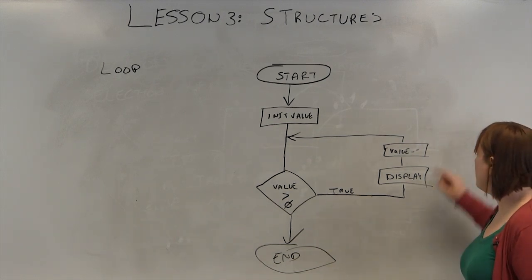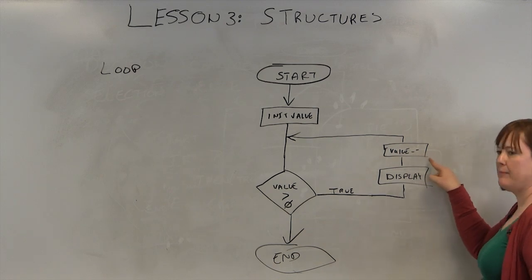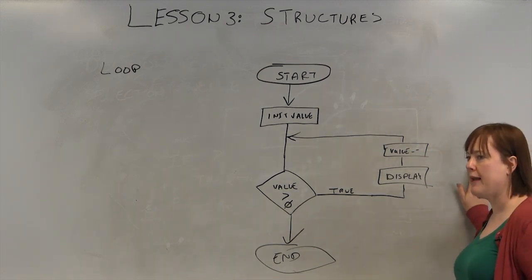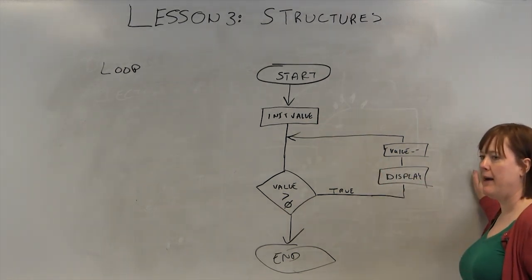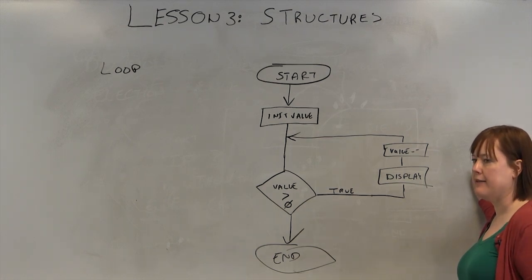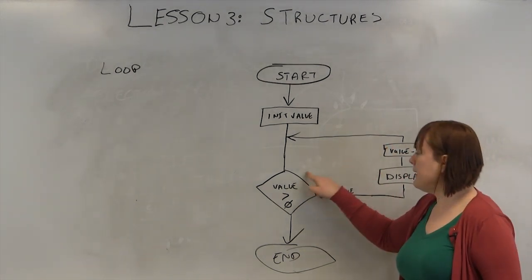And then we would decrement. What I have here, it's value minus minus. That's shorthand in programming for the item value is going to equal itself minus 1. So instead of value being equal to 99, value will be equal to 98, and it's going to go through the loop again.